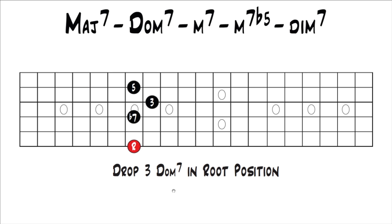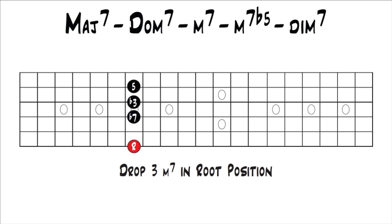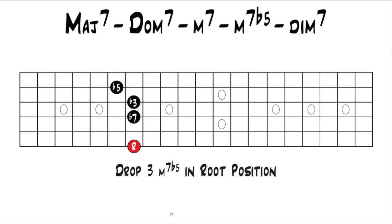To go from dominant 7th to minor 7th, you move the major 3rd down to a minor 3rd, giving you a drop 3 minor 7 in root position. To get to a minor 7 flat 5, you move the 5 down half a step to a flat 5 or diminished 5th, giving you a drop 3 minor 7 flat 5 in root position. Then to get to a diminished 7th, you move the flat 7 down half a step to a double flat 7 or diminished 7th, and that becomes a drop 3 diminished 7th chord in root position.